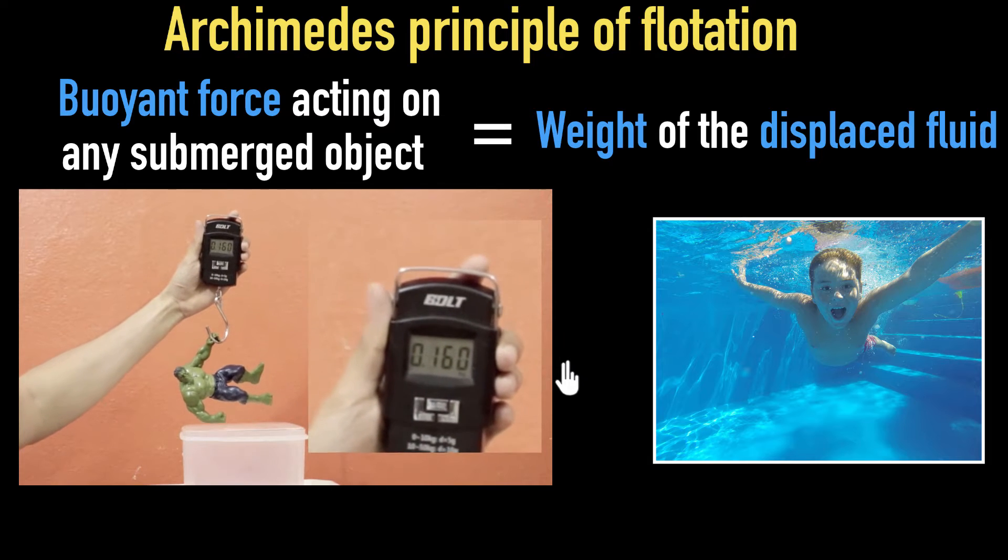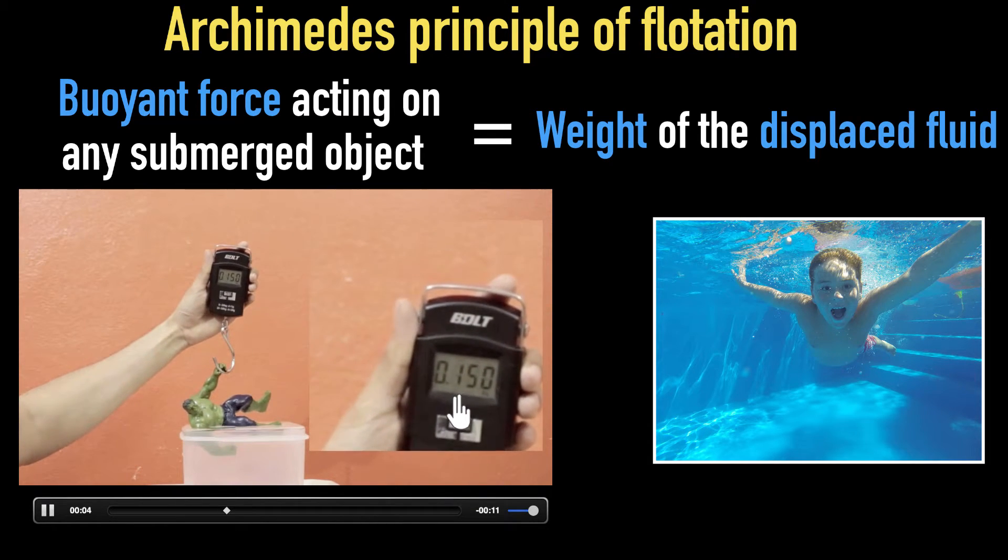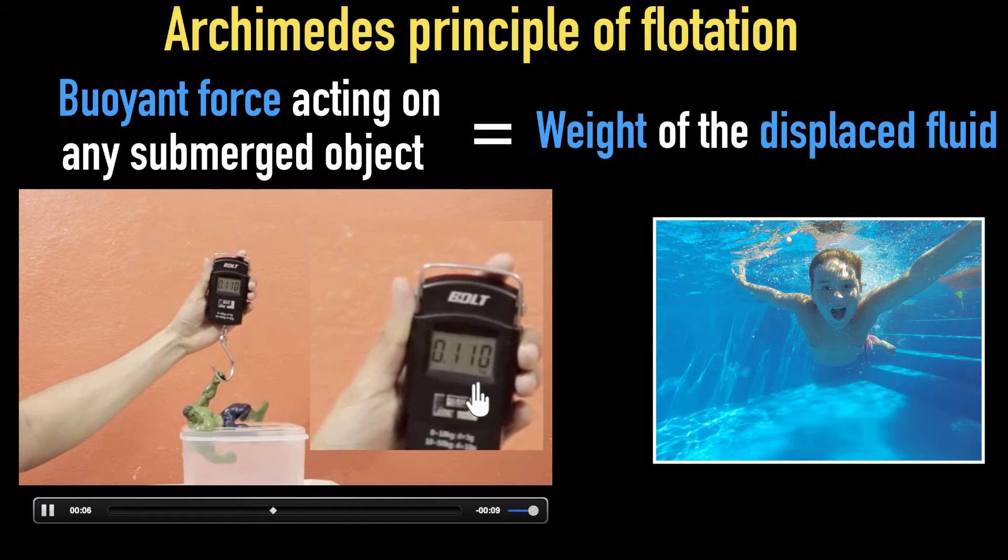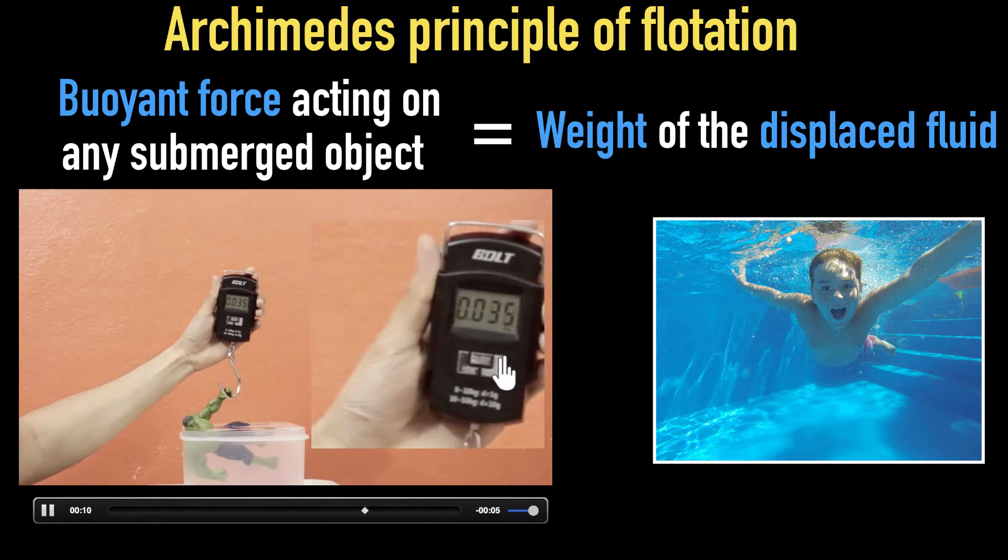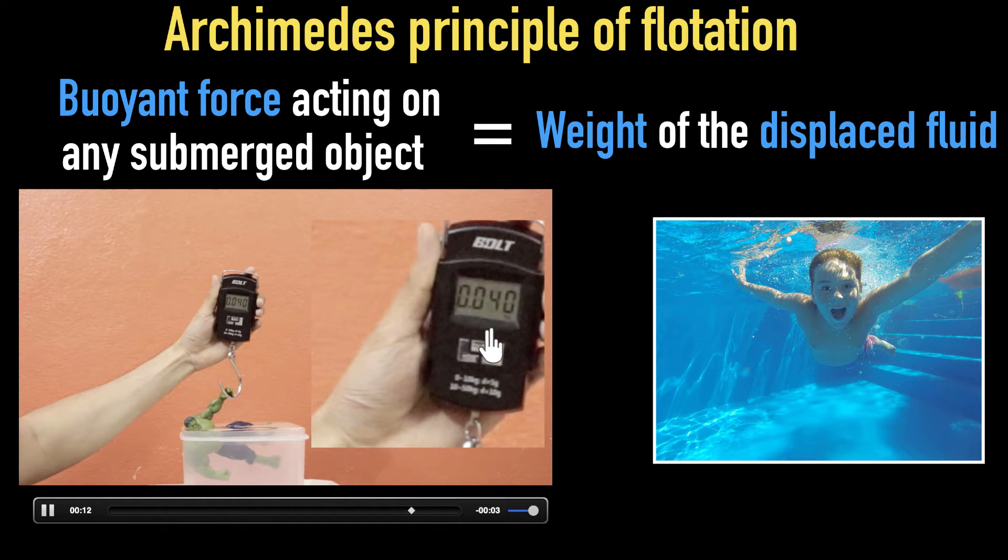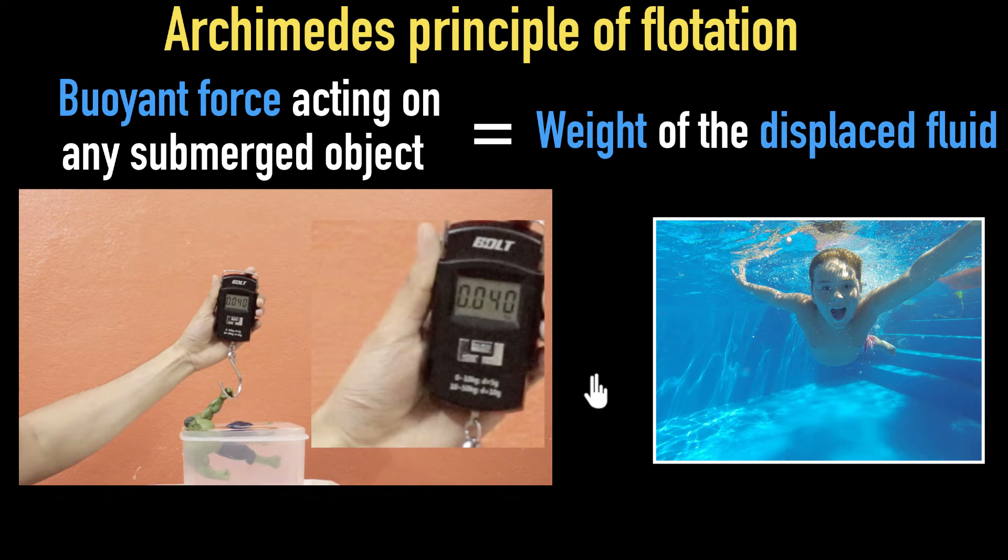See what happens to it. Look at that weighing scale. As I dip him underwater, the reading becomes lower because Archimedes is feeling lighter and lighter. And this is not just true for water, this would be true for any liquid. So you submerge a body inside a liquid and that body will feel light. But what does that mean or why is this happening?